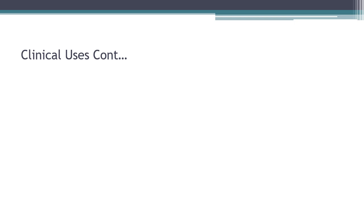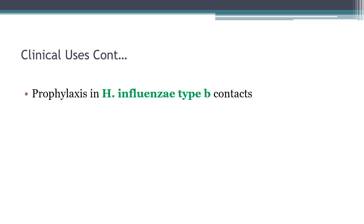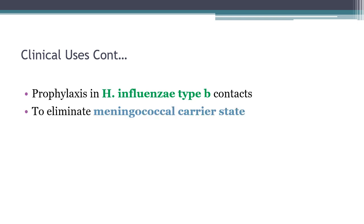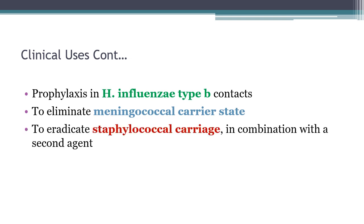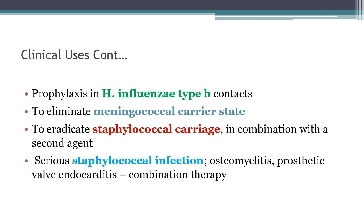Rifampin is also used for other bacterial infections: prophylaxis in H. influenzae type B contacts, to eliminate meningococcal carrier state, and to eradicate staphylococcal nasal carriers responsible for recurrent furunculosis — given in combination with a second agent. It is also used to treat serious staphylococcal infections, especially with vancomycin, including osteomyelitis and prosthetic valve endocarditis.